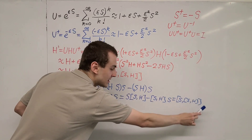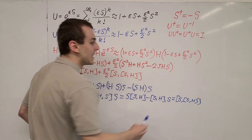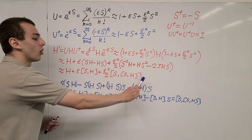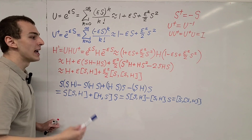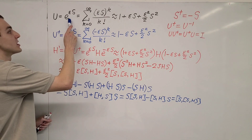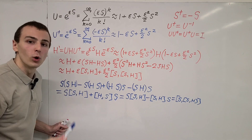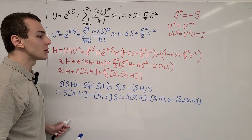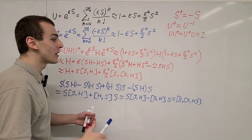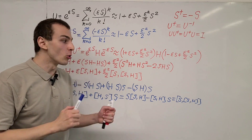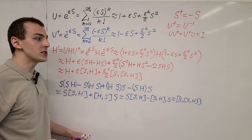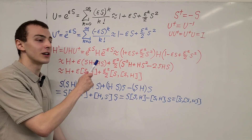Hopefully this makes sense and you can see why we have a nested commutator appearing. We're going to use this form of the Hamiltonian transformation in the next video in the quantum mechanics playlist, where we'll use transformations of this form to do the Schrieffer-Wolff transformation. That will allow us to diagonalize a Hamiltonian using perturbation theory with a second order approximation. You can find all the videos in the quantum mechanics playlist by clicking here.